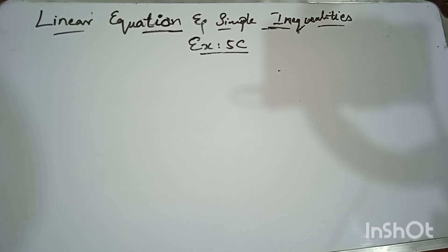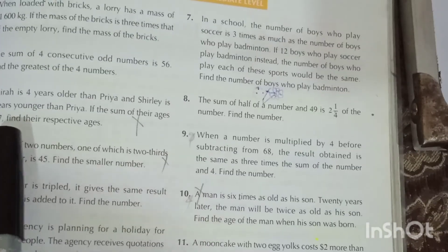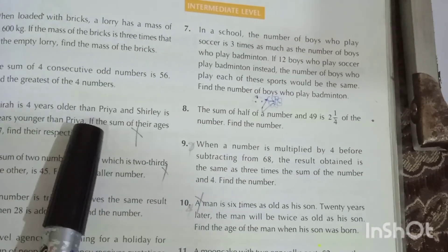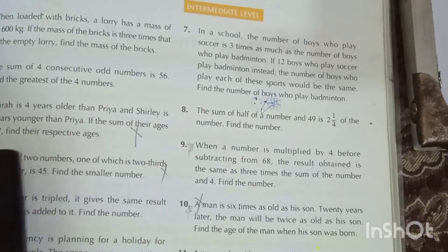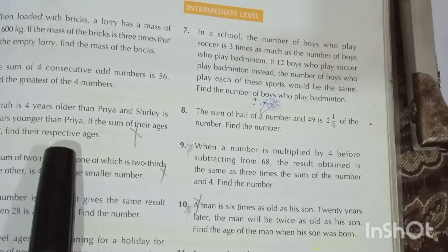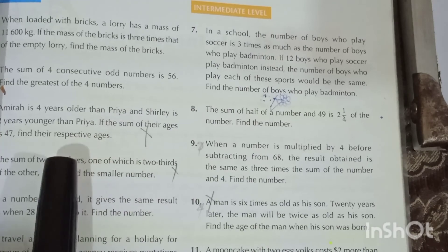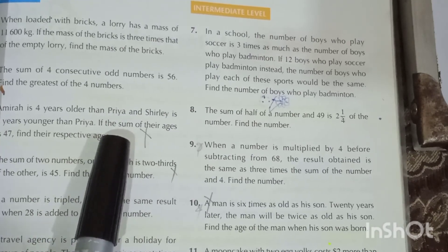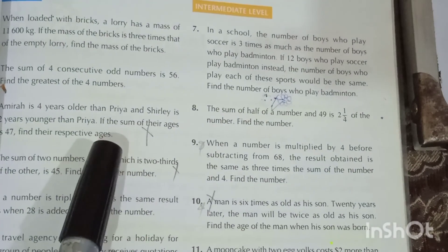Question number 3: Amira is four years older than Priya, and Shirley is two years younger than Priya. If the sum of their ages is 47, find their respective ages. The main target here is Priya, because the other ages are defined relative to hers.